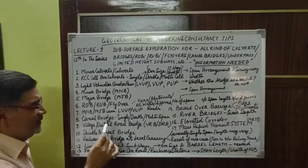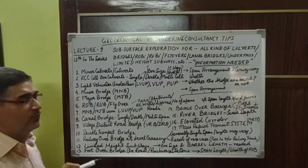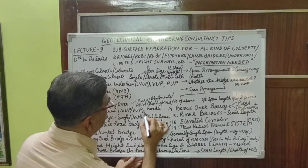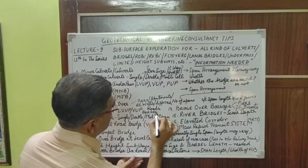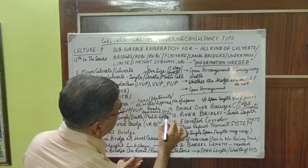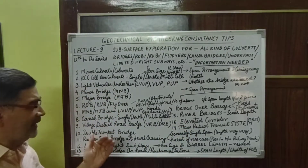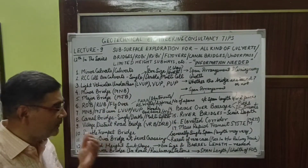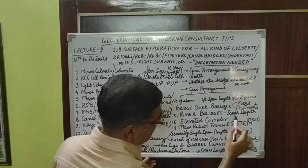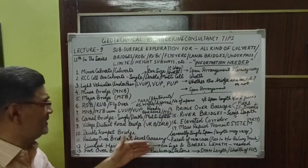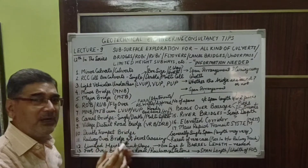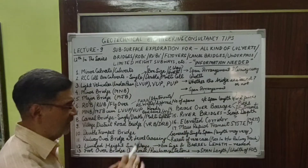For canal bridges, which may be single span, double span, or multi-span, the information we need to collect includes the bed level, the HFL (High Flood Level), and the low water level. For canal bridges we can provide individual footing based on the estimated scour depth. For small canal bridges, we have to build upstream and downstream curtain walls to avoid the effect of scour.